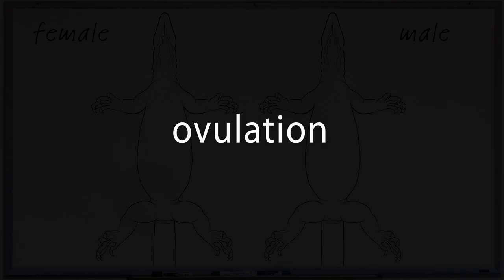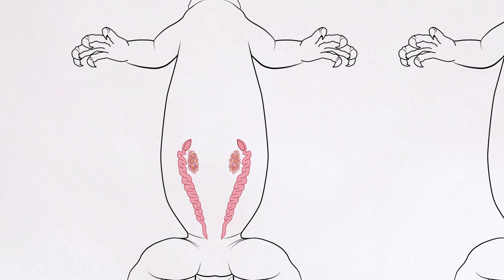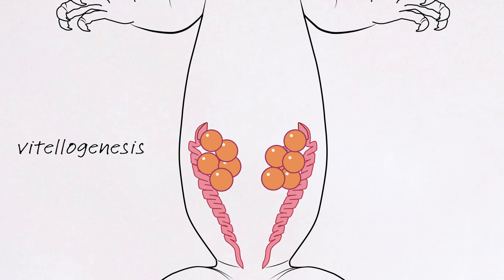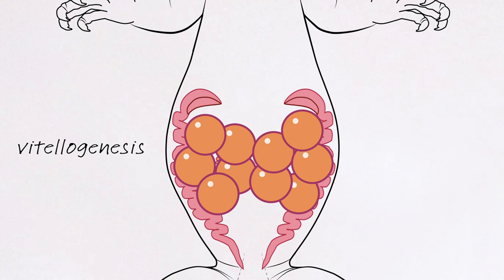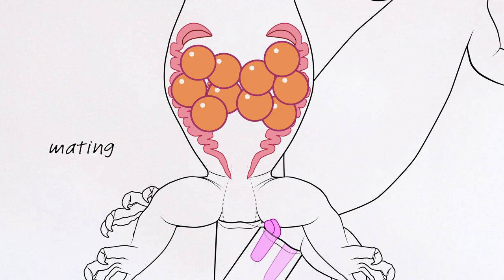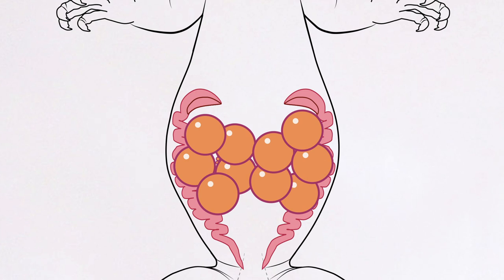You may recall from episode 4 that during vitellogenesis, several of the female's egg cells, or ova, develop yolk and enlarge. And from episode 5, it is during vitellogenesis that the female becomes receptive to the male, so they begin mating. The male's sperm travel up the oviducts and collect at the mouths of the oviducts. During ovulation, the yolked-up ova are released from the ovaries and enter the oviducts, where they are fertilised by the sperm that has been waiting at the mouths of the oviducts since mating.